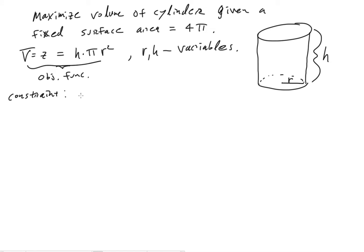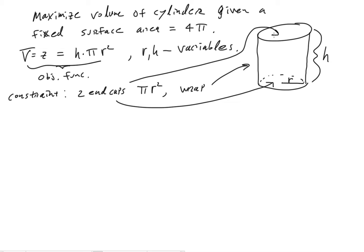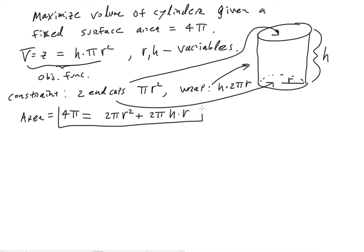The constraint is going to be the fixed surface area. We have two end caps, each one is π r squared, and then we also have the wrapping around, which is h times 2π r. So the area equals 4π, which is equal to 2π r squared plus 2π h times r. That whole thing has to equal 4π — there is our constraint equation.